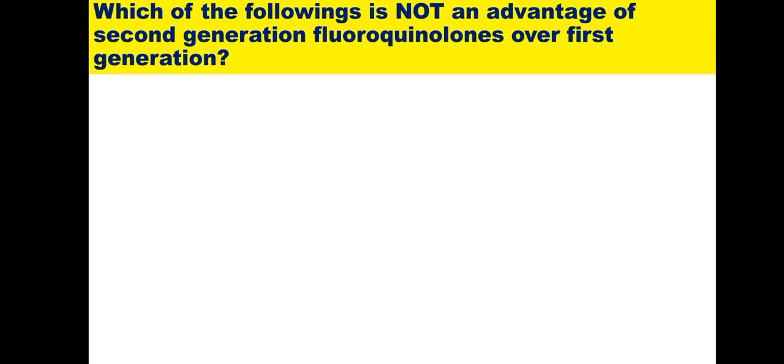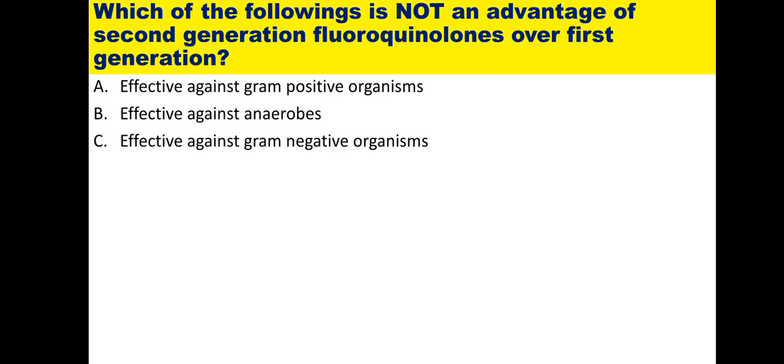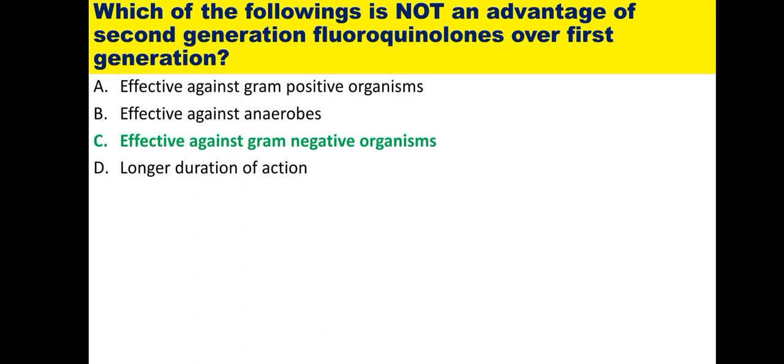Seventeenth: which is not an advantage of second generation fluoroquinolones over first generation? Options are effective against gram-positive, effective against anaerobes, effective against gram-negative, and longer duration. First generation fluoroquinolones include ciprofloxacin, ofloxacin, pefloxacin, norfloxacin. Second generations include levofloxacin, sparfloxacin, gatifloxacin, moxifloxacin — with better stability, pharmacokinetic profile, and extended spectrum including gram-positive and anaerobes. However, for gram-negative coverage, first generation remains superior, so that is not an advantage of second generation. The correct answer is option C.